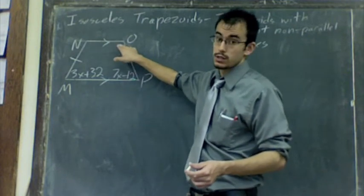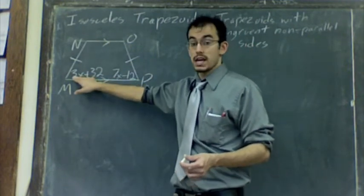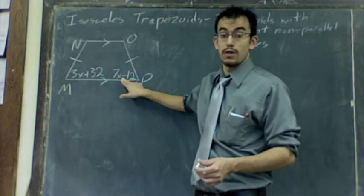So for instance, if this was 100, so is this. If this was 80, then so is this. They're congruent. Congruent means equal.